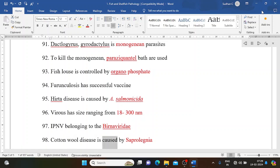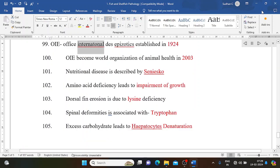Cotton wool disease is caused by Saprolegnia. Office International des Epizootics established in 1924. OIE become world organization of animal health in 2003.